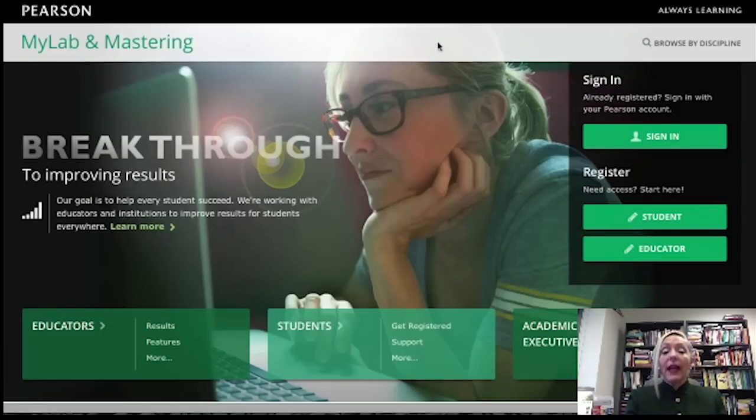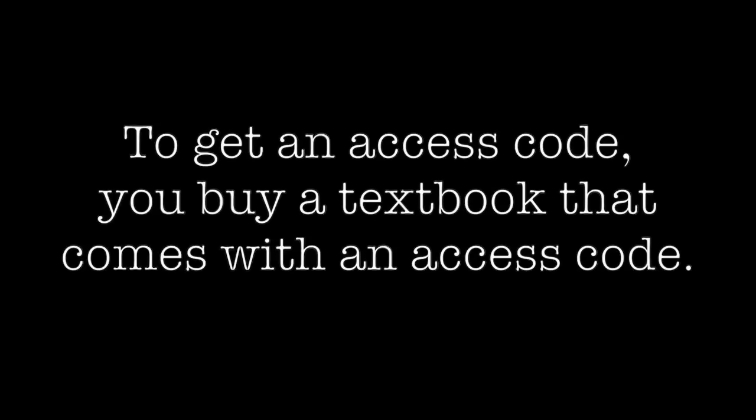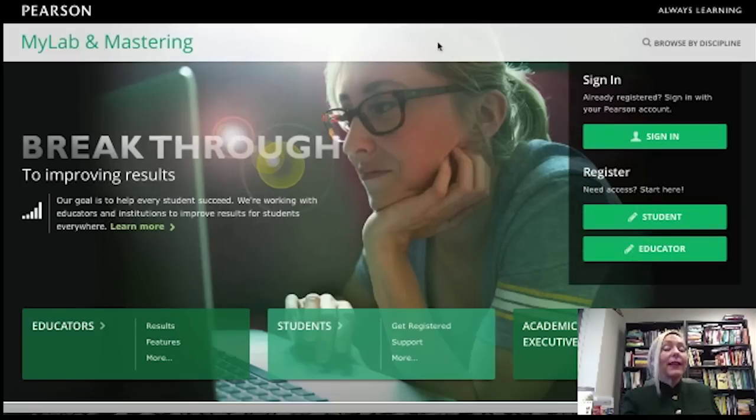And then you need an access code. To get an access code, you buy a textbook that comes with an access code. If you buy a textbook that does not have an access code with it, you're going to have to pay another $90 to $100 extra. So, buy a book with an access code, or you can just pay the $90 to $100, pay for the access code, and it comes with the entire digital book in the site, so that you will have your book with you all the time. So, you do not need a hard copy of the book if you don't want one.